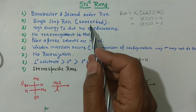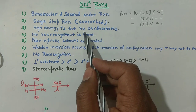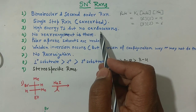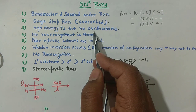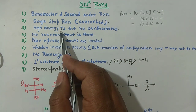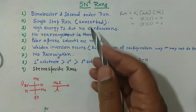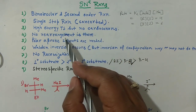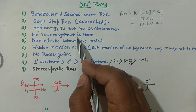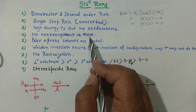There is no carbocation intermediate in SN2. Recall that in SN1 reactions, carbocations do form, but in SN2 there is no reaction intermediate — only a high-energy transition state. Since no carbocations form, there is no rearrangement of carbocations in SN2 reactions.